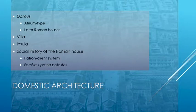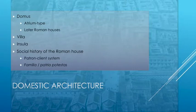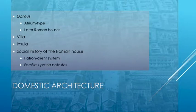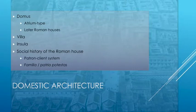Later Roman houses will develop in such a way that they mostly lose the atrium. The villa is a house explicitly not in the city, found in the countryside or at the seashore. It can mean a productive farmhouse or a house associated with industry, or a luxury retreat for elite persons. The insula — the Latin word for island — is used to indicate a multi-story apartment building in Roman cities.